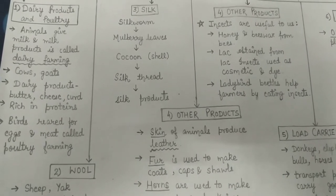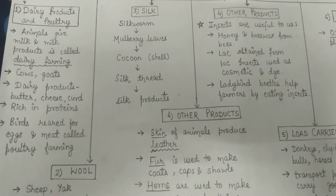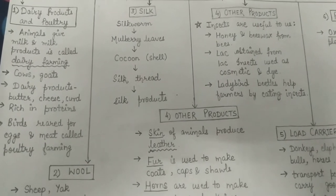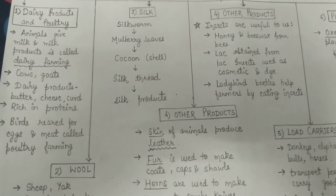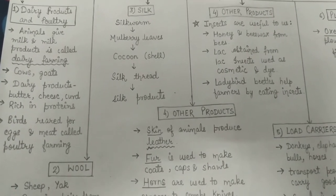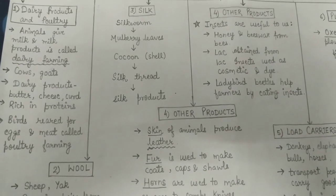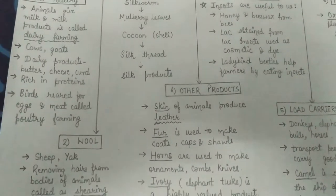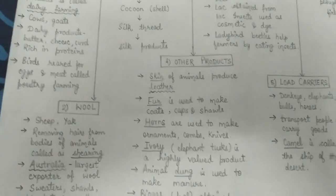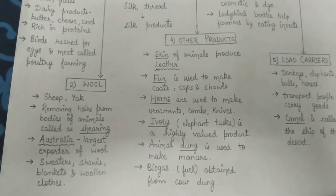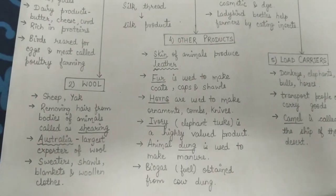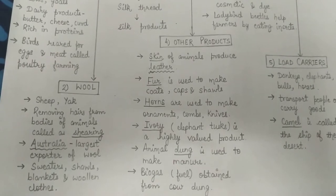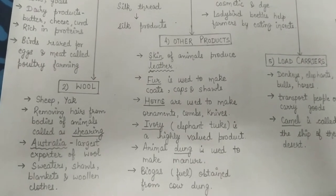All these things, whether dairy products or poultry products, we get from animals and birds. The next importance of animals is wool. Animals such as sheep and yak are reared for wool.